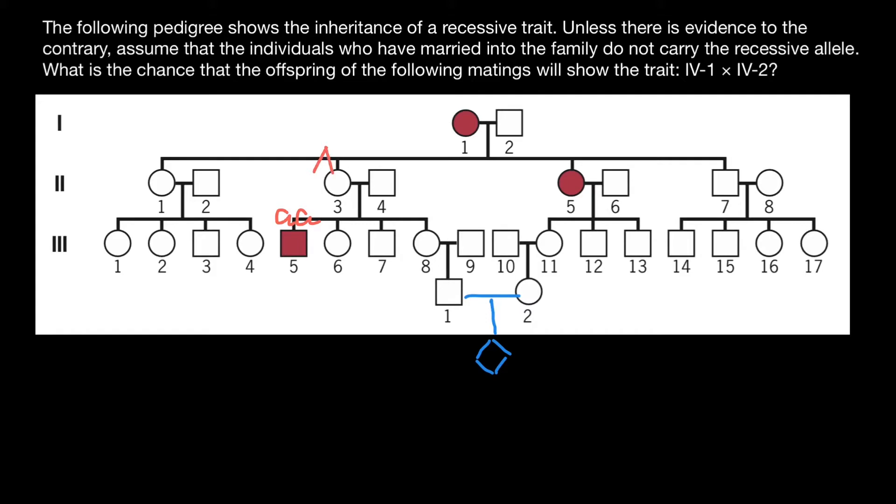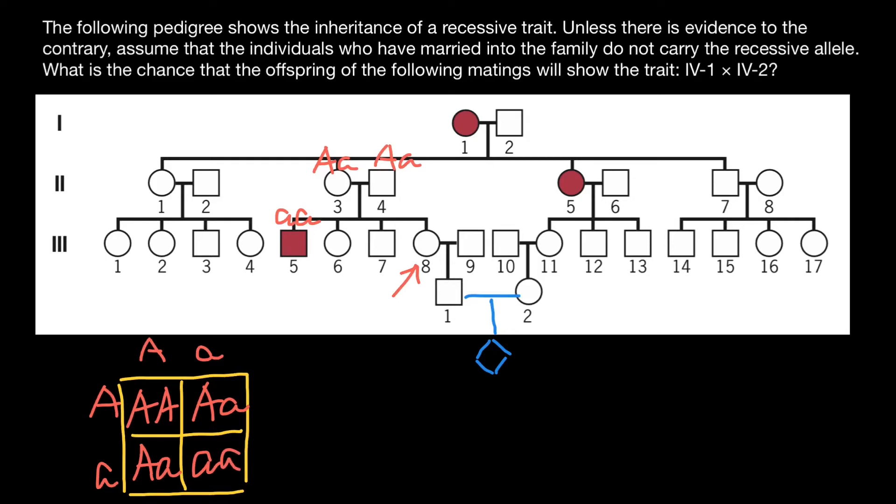That means that every parent here is a carrier. And what are the chances that the daughter here would be a carrier too? One parent is heterozygous, another parent is heterozygous. And when we build a simple Punnett square, we can find the chances for the daughter to be a carrier. As you see, chances are not 50% because we know that this female is phenotypically normal. So we can exclude this variant. And we have now only three variants left. Her probability to be a carrier would be two out of three.